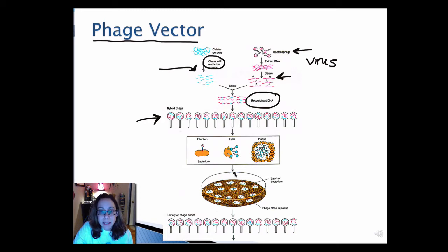You then take the bacteria and spread it out on agar media, just like you would do with bacteria. You're going to get a lawn of bacteria, except where you have your virus or phage, you're going to get lysis of the bacteria and you're going to get plaques or clear zones. So wherever you have a plaque, that's where you have your virus containing your hybrid or recombinant DNA. And you can collect these plaques to make a whole library of phage clones.